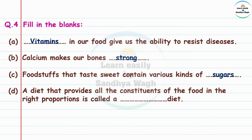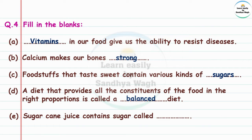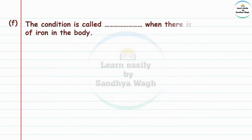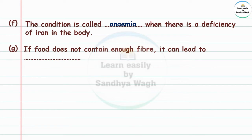A diet that provides all the constituents of food in the right proportions is called a balanced diet. Sugarcane juice contains a sugar called sucrose. The condition when there is a deficiency of iron in the body is called anemia. If food does not contain enough fiber, it can lead to constipation.